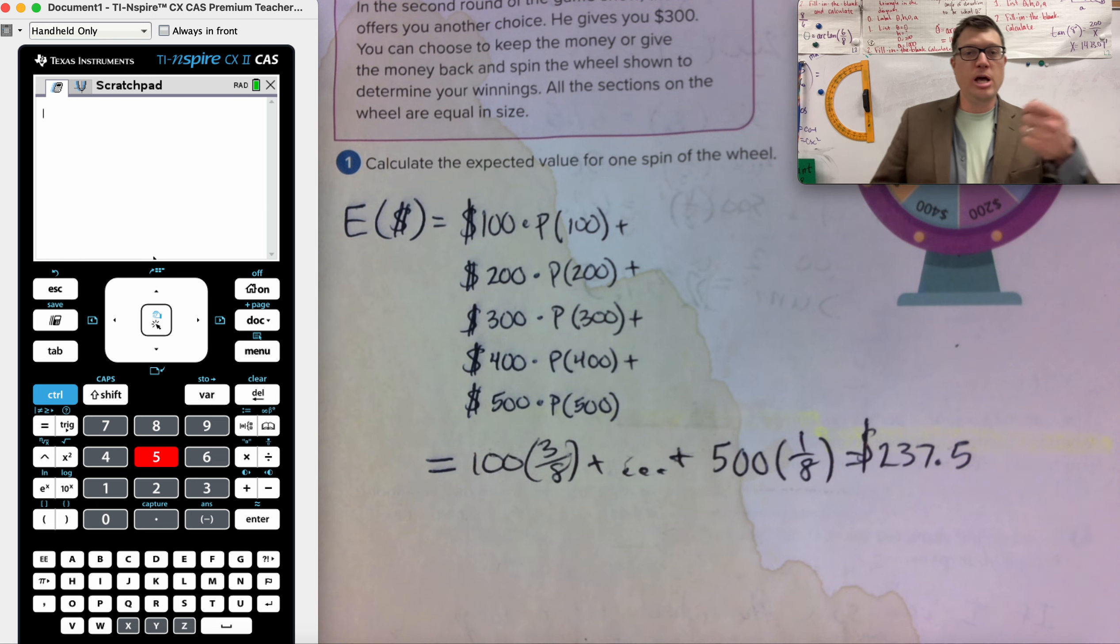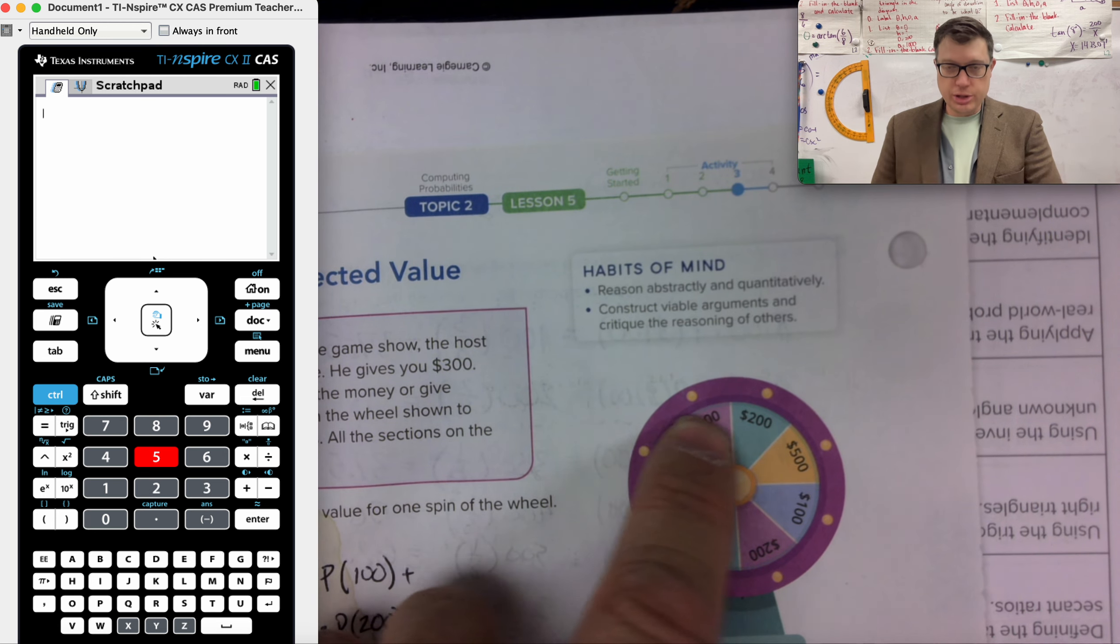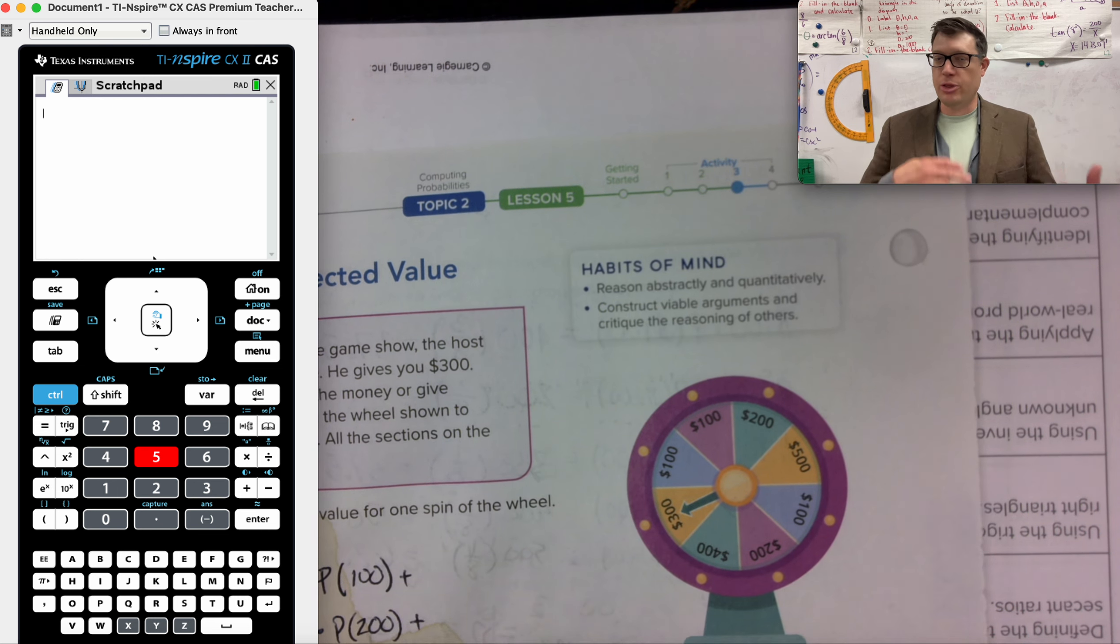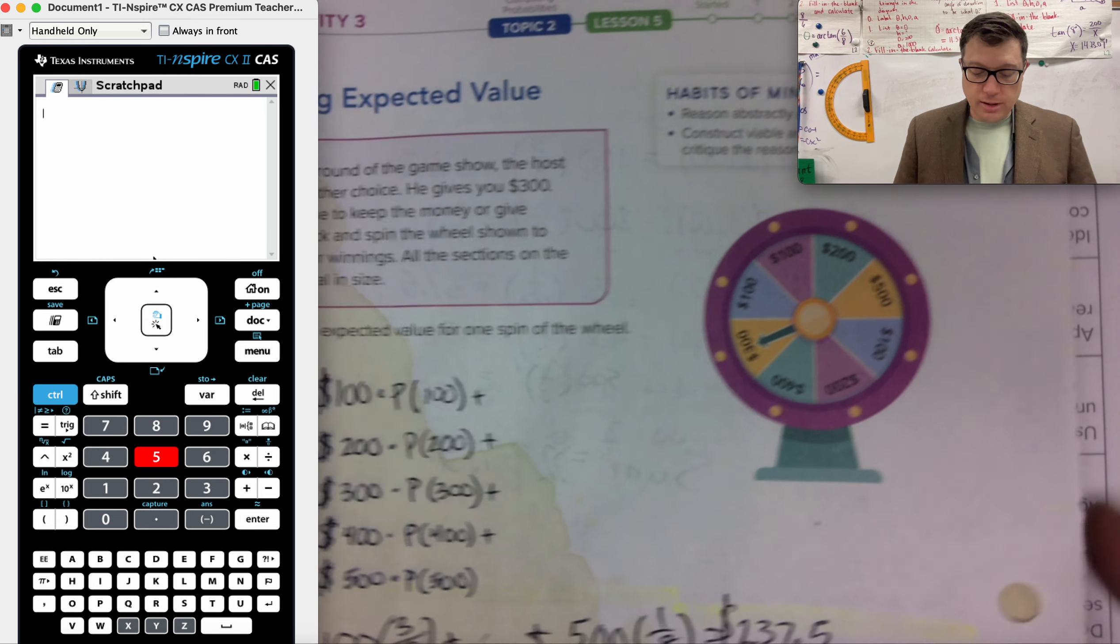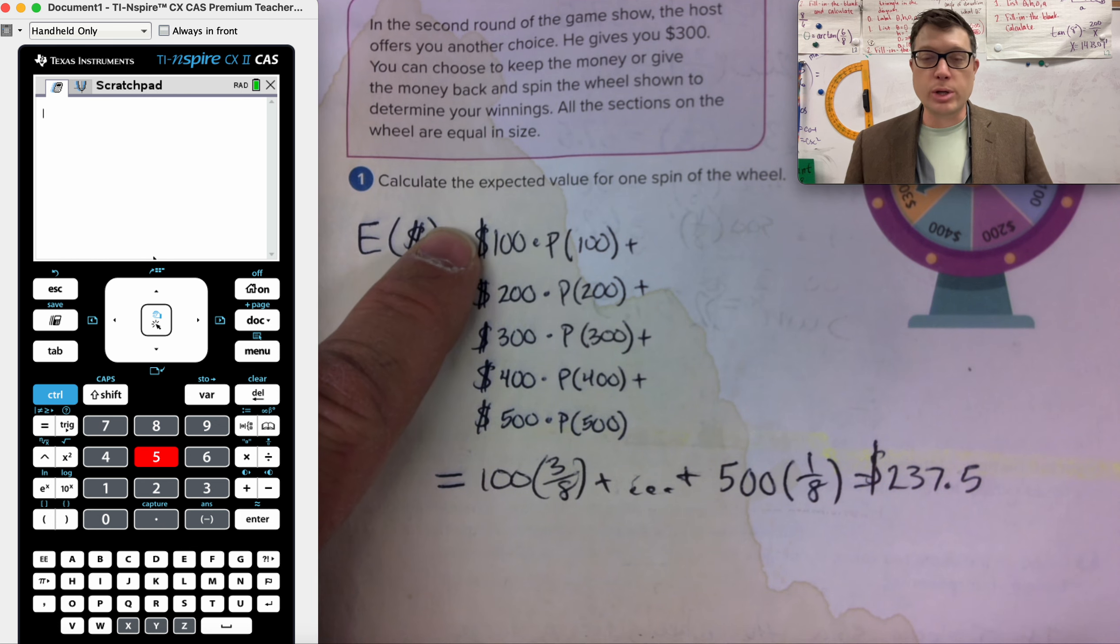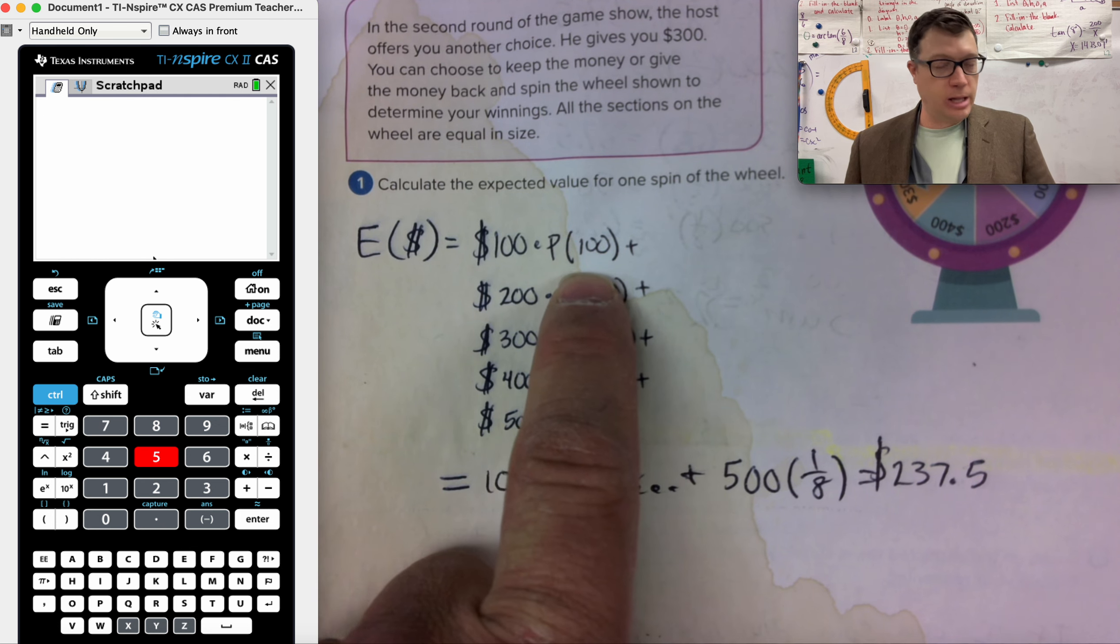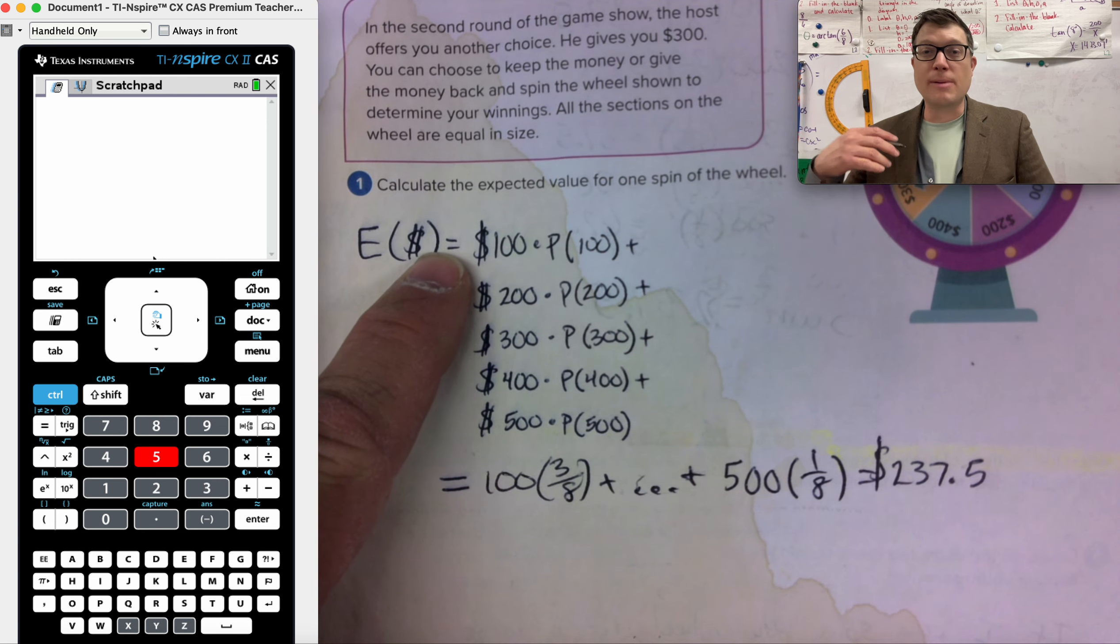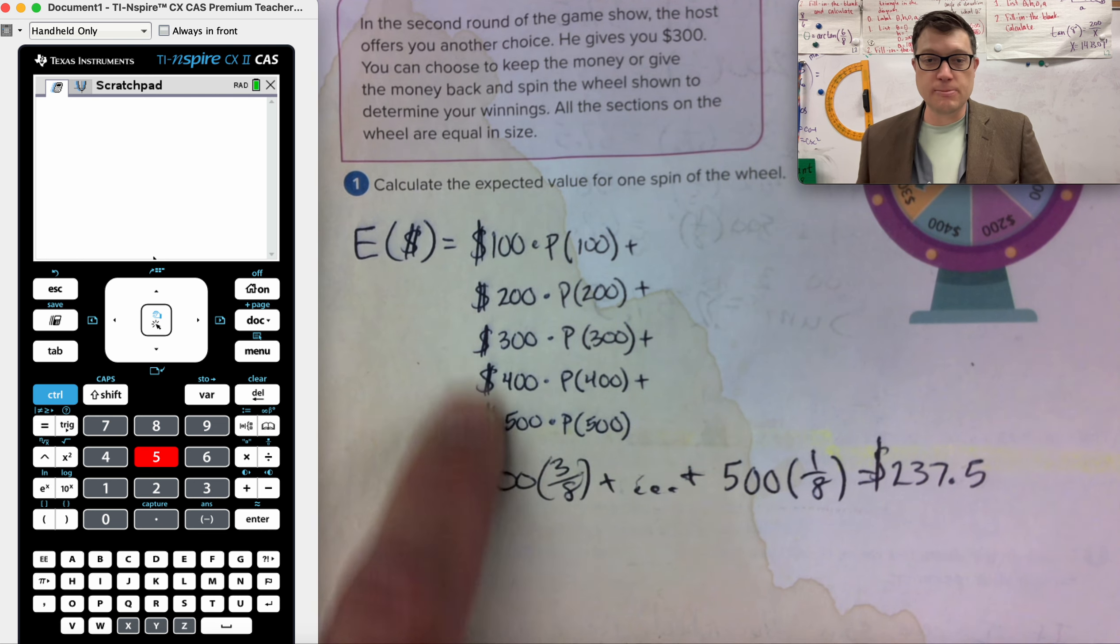We're still back on the same conversation. Calculate the expected value for one spin of the wheel. And in this one, it should be a different wheel, shouldn't it? Maybe you have a different wheel in your textbook than mine. So just check that there's 100, 200, 500, 100, 200, 400, 300, 100, right? You've got those numbers in that arrangement. If you have a different copy of the book, then you're going to need to set up a different expected value formula here. It's going to have to include those values and the probability of that value happening. And then you're going to add it because this answer key says goes up to 700 and that's not visible here.